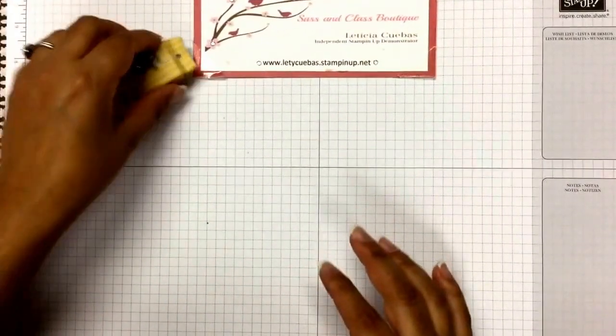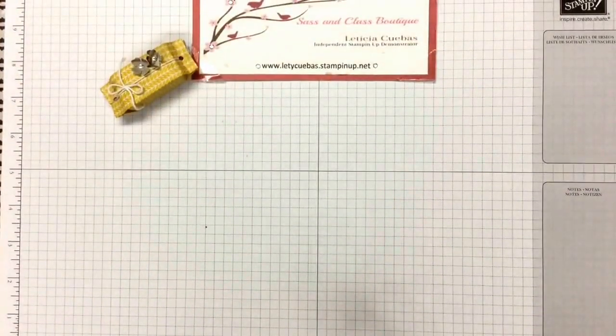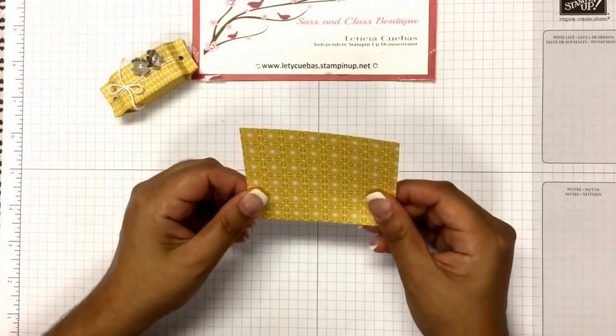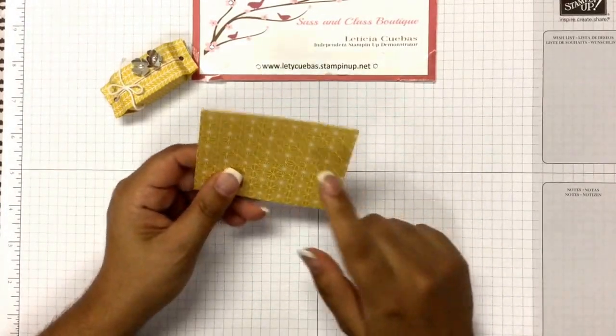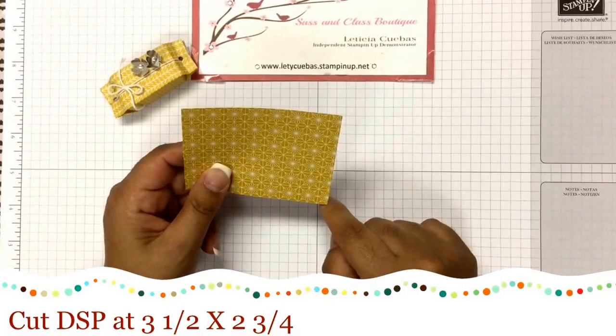So what you're going to need is a piece of cardstock that measures three and a half by two and three quarters.